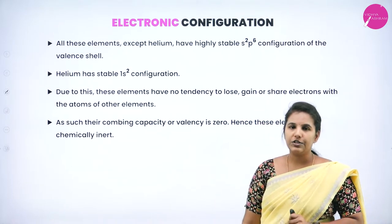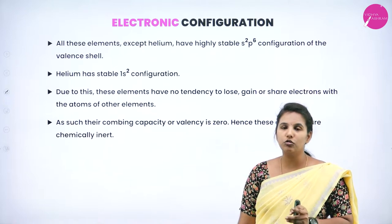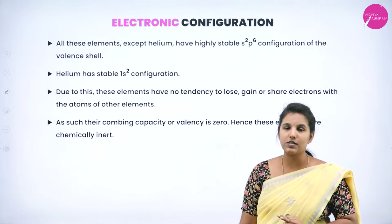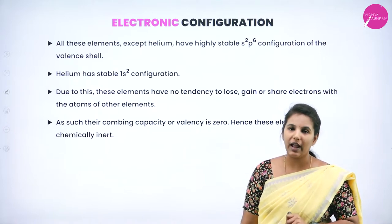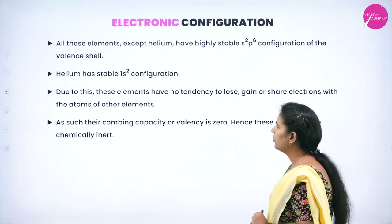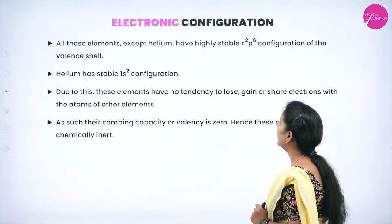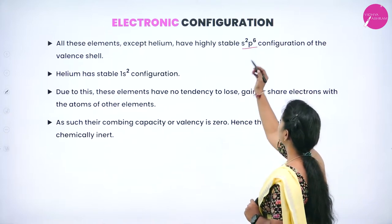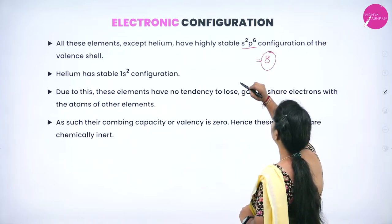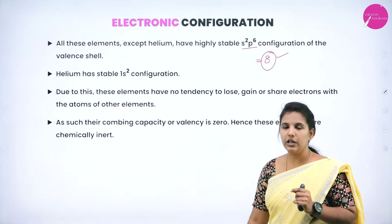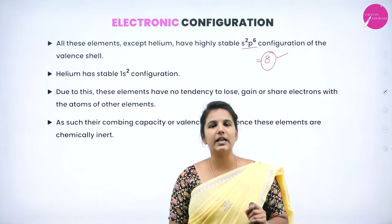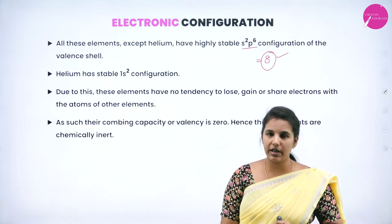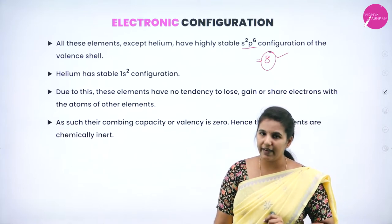Coming to their electronic configuration: these zero group or group 18 elements have completely filled shells. All elements except helium have a highly stable S2P6 electronic configuration in their outermost shell, containing 8 electrons, which satisfies the octet structure. All group 18 elements except helium show this stable electronic configuration in their valence shell.